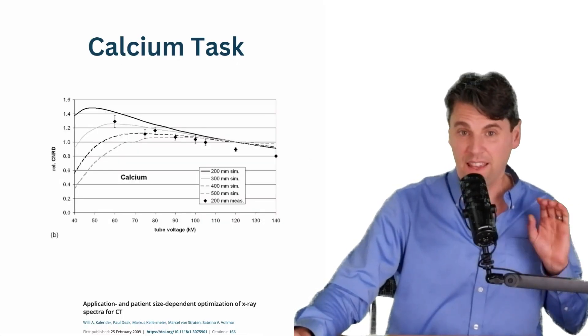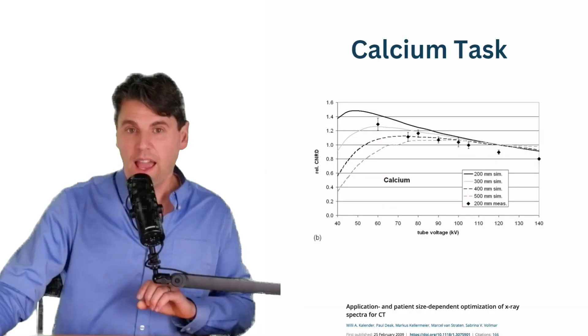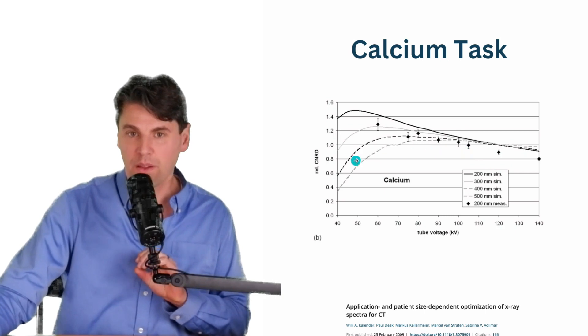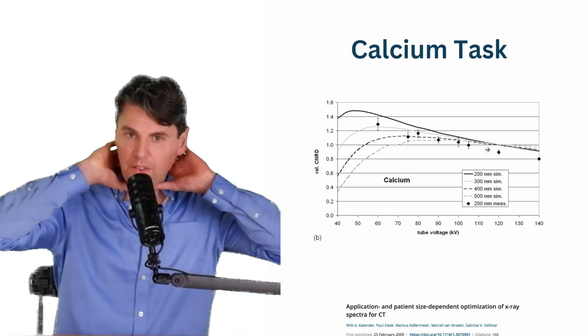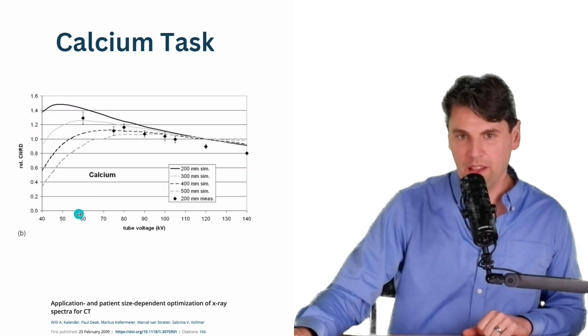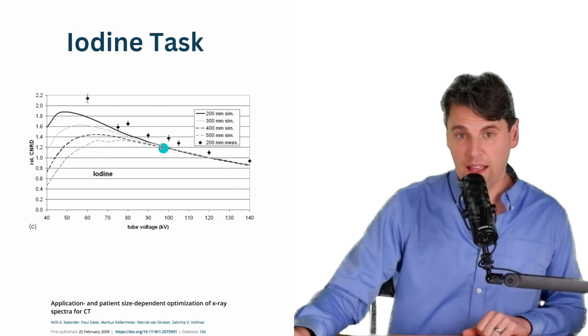Then if you made your task calcium, now you're looking at significant amount of photoelectric effect. And you can see that it would really be beneficial to go to a lower KVP. But again, the amount that it's going to help really depends on the size of the patient. So if you have a very small patient or a neck or something like that, where you're only looking at 20 centimeters of water equivalent diameter, the optimal KVP is way down here, around 50 KVP. And then similar behavior is seen for iodine tasks also, where again, there's significant difference between the size of the patient.